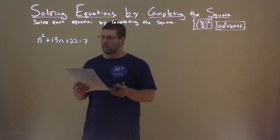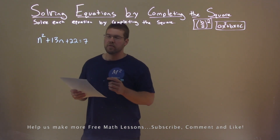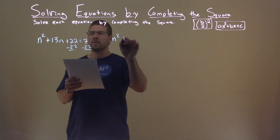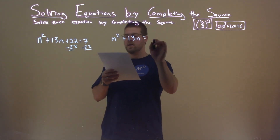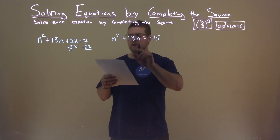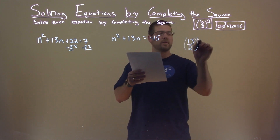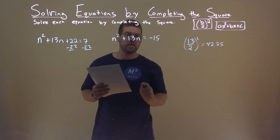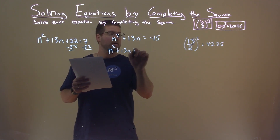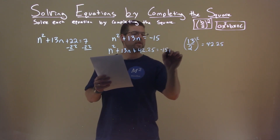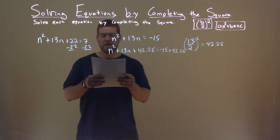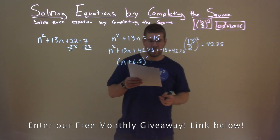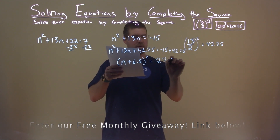We're given this problem right here: n squared plus 13n plus 22 equals 7. We want to solve this by completing the square. First thing I'm going to do is subtract 22 from both sides, leaving me with n squared plus 13n equals 7 minus 22, which is negative 15. We look at our B value, which is 13. Dividing by 2 and squaring the whole thing comes out to be 42.25. Adding 42.25 to both sides: n squared plus 13n plus 42.25 equals negative 15 plus 42.25. The left-hand side is a perfect square — n plus 6.5, all squared — and negative 15 plus 42.25 is 27.25.